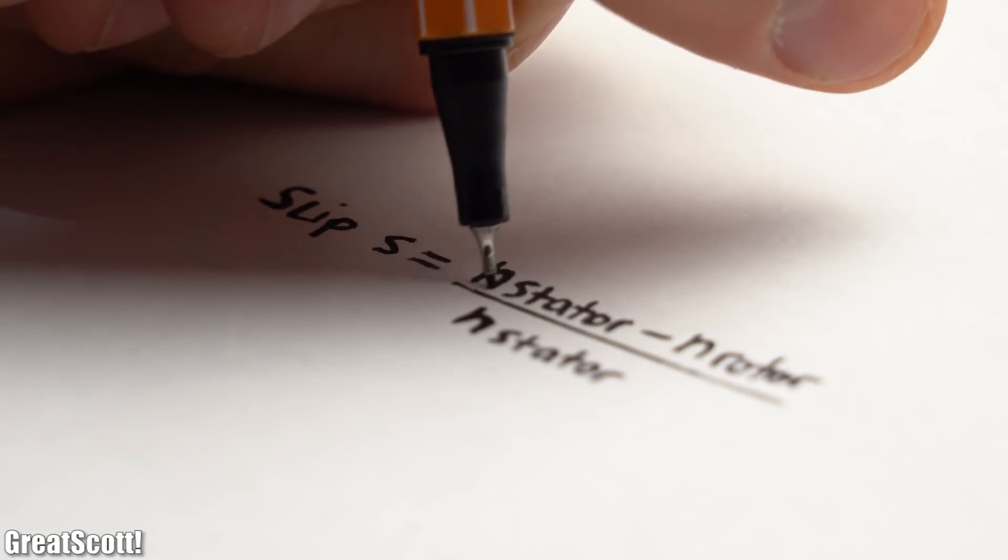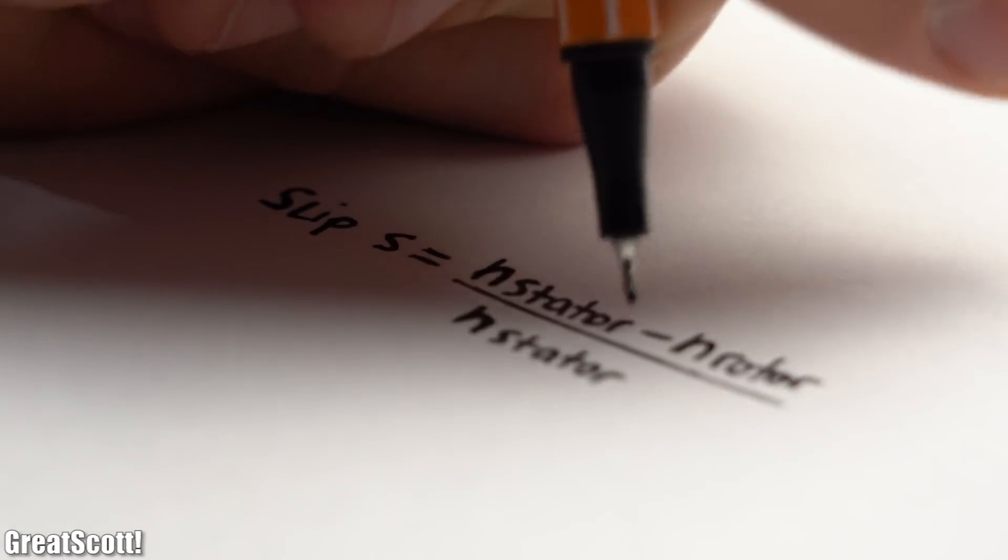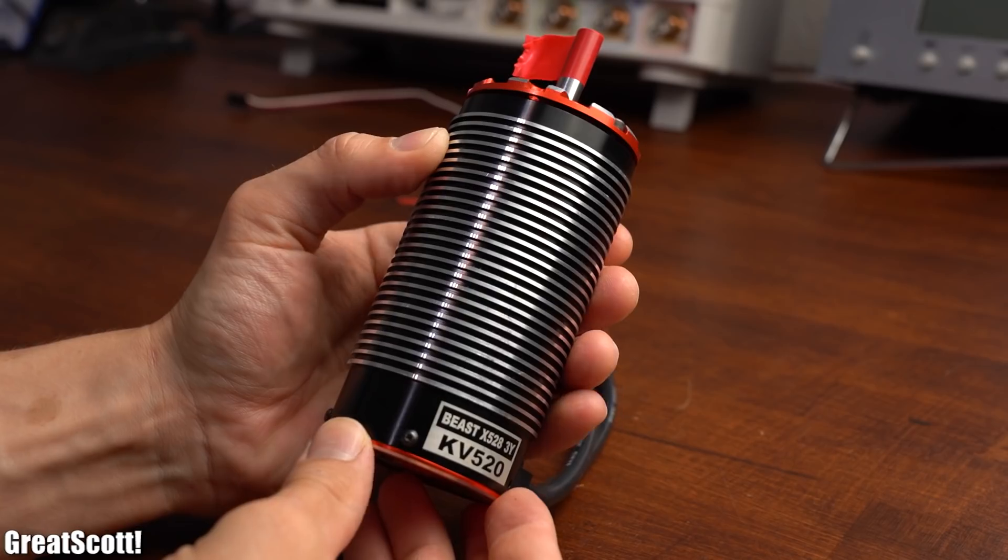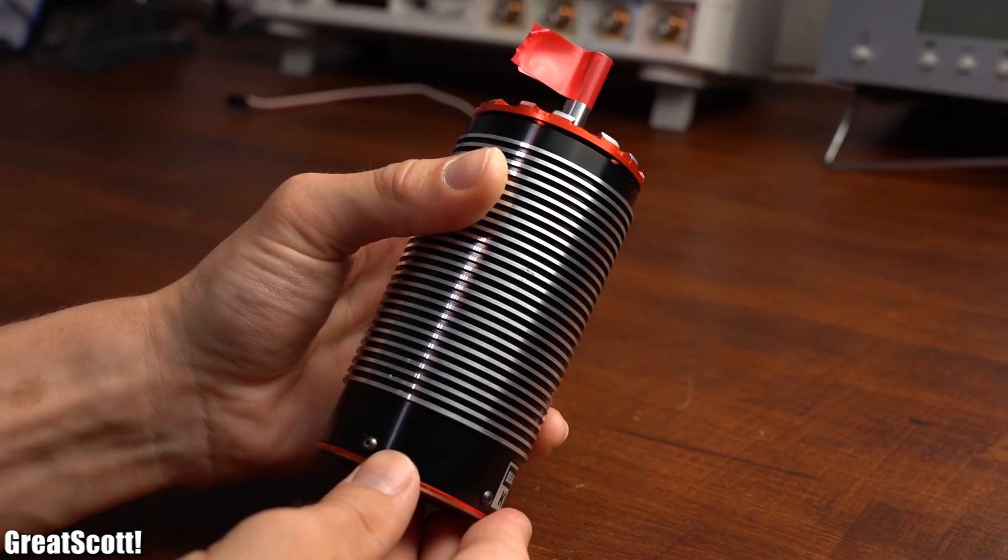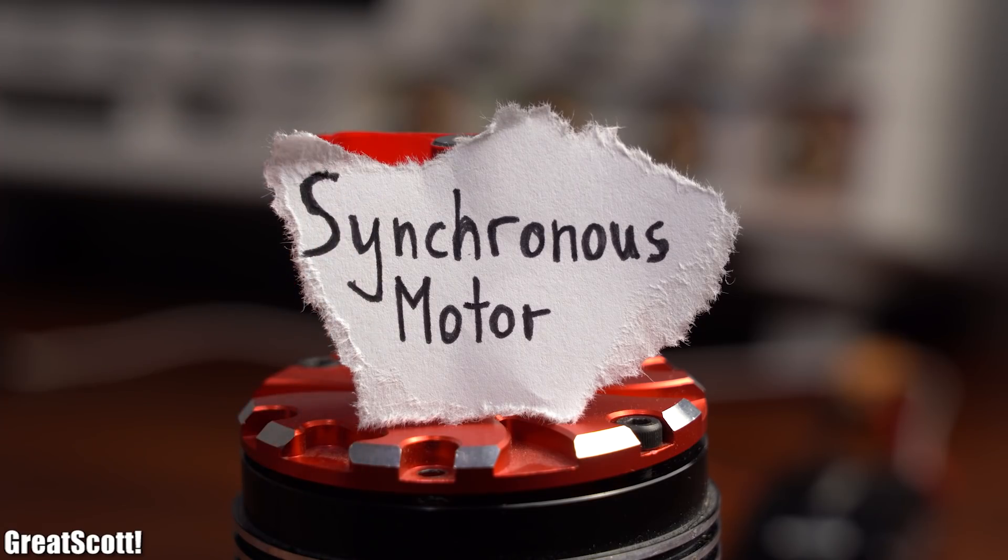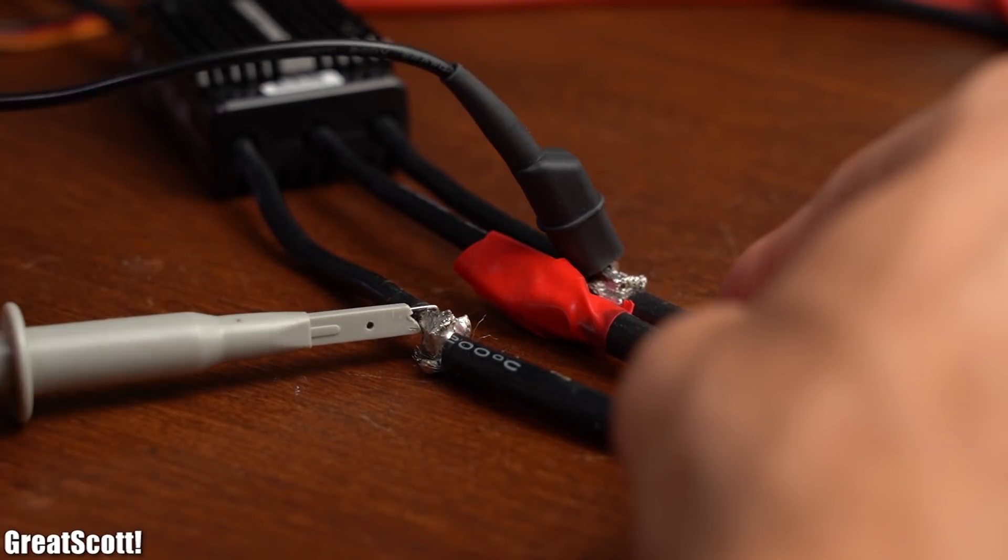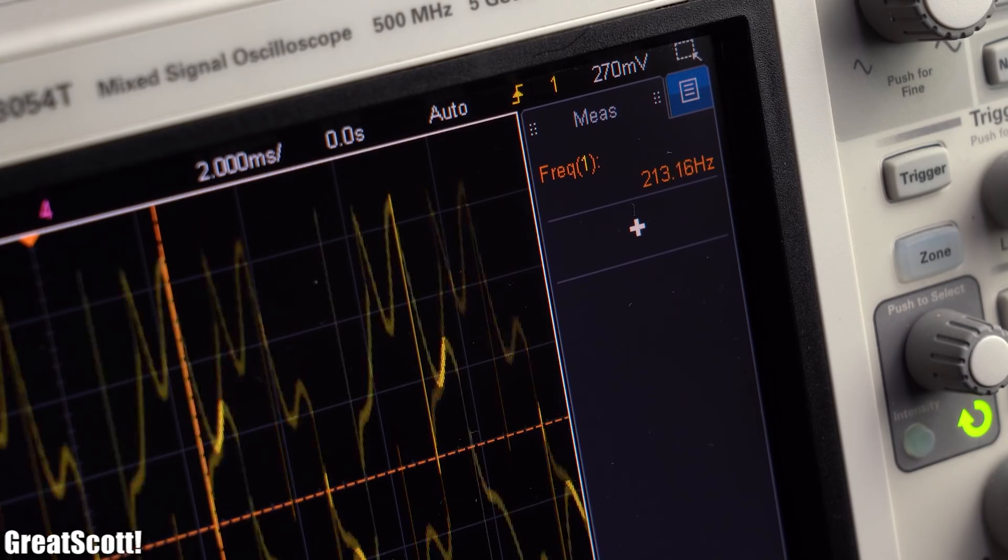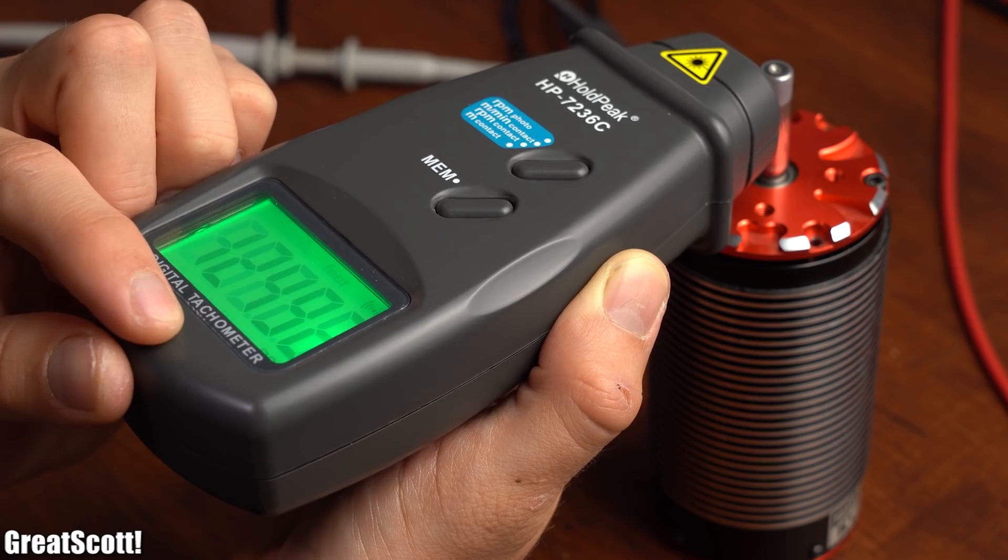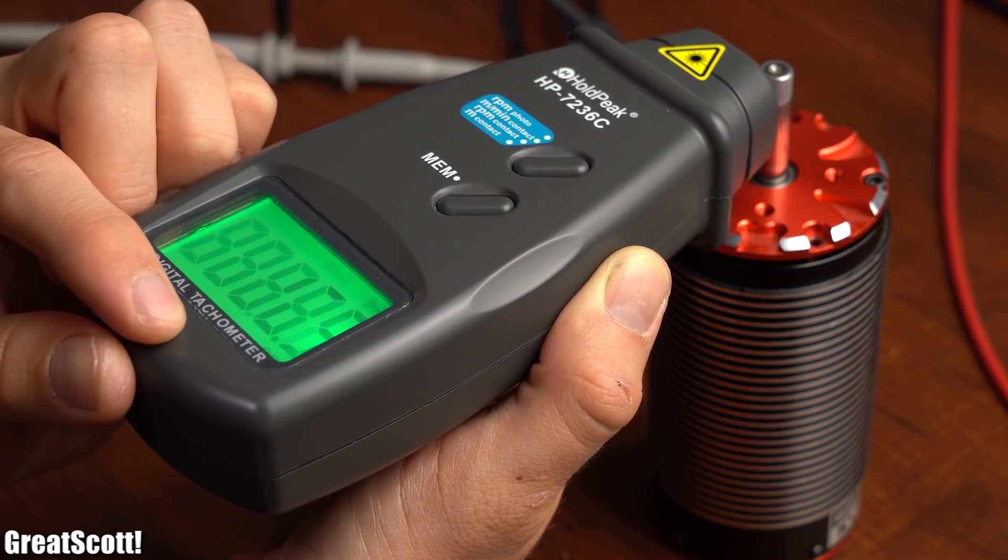This difference in rpm is actually called slip and it is an important characteristic of such motor types. As a comparison a common BLDC motor is actually a synchronous motor type because if we look at the frequency of the applied 3 phase AC voltage then we can do some calculations and find out that the rotor is spinning with this exact rpm.